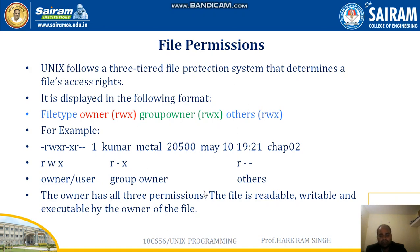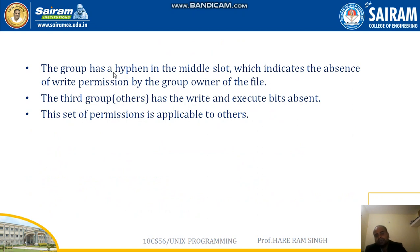The owner has all three permissions — the file is readable, writable, and executable by the owner. The group has a hyphen in the middle slot, indicating the absence of write permission for the group owner. The third group has write and execute bits absent, meaning others have only read permission and cannot write or execute the file.